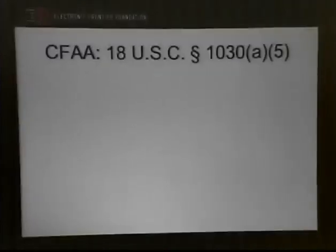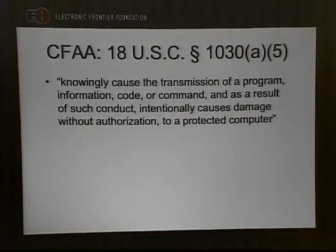The CFAA was originally designed to combat computer hacking — deterring people from stealing credit card numbers and hacking into banks. The main criminal provision that gets charged most frequently is Section 1030(a)(5). It has three crimes at varying levels of seriousness. The first is knowingly causing the transmission of a program, information, code, or command, and as a result intentionally causing damage without authorization to a protected computer. A protected computer is essentially any computer plugged into the Internet.